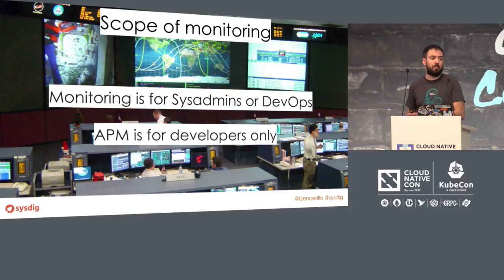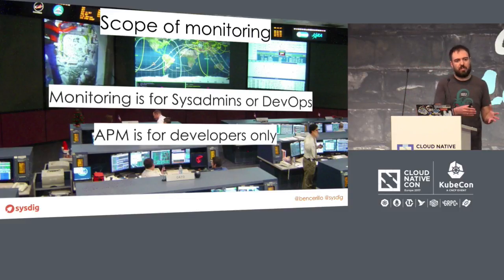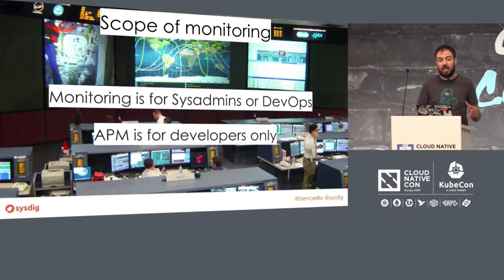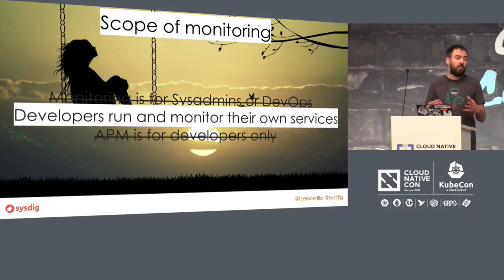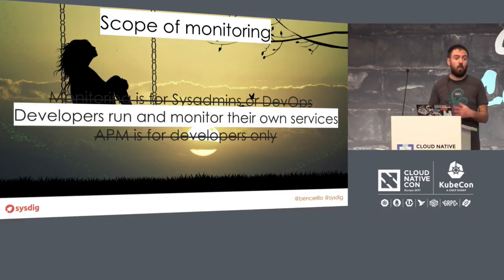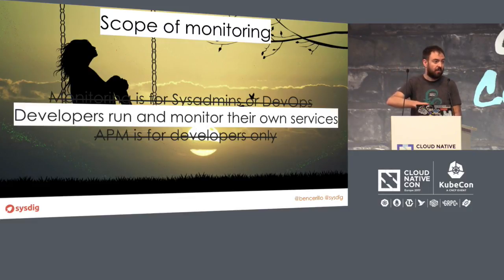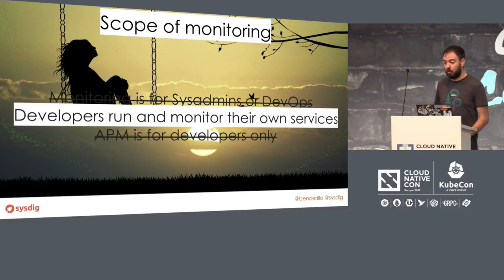I found some people saying infrastructure monitoring is mostly for SysAdmins or DevOps. And some other folks were saying developers should be using APM and nothing else. The truth is that more and more, especially using tools like Kubernetes, developers are the ones in charge of running the services they use in their applications. So we need tools that cover and have visibility across the full stack.